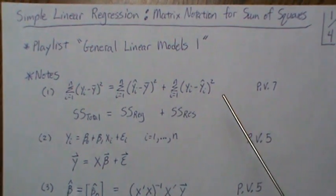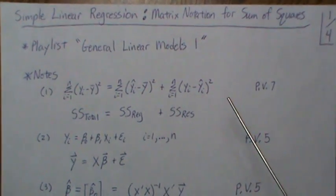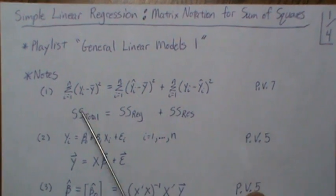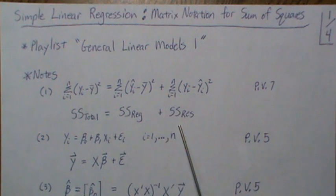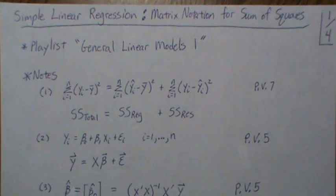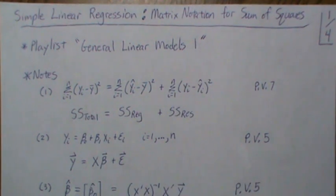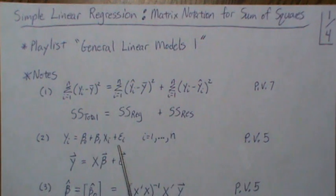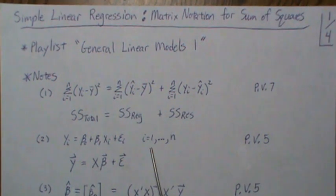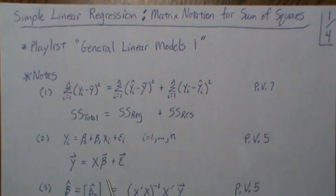Once we do that, some follow-up videos after this will talk about the distributional properties of these sums of squares. We're going to develop a test statistic to look at how well the model fits the data and how useful it is. In previous video 5 in the list, we take the scalar notation and write it in matrix form.